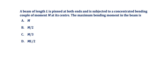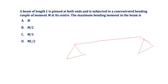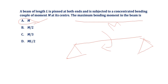A beam of length L is pinned at both ends and is subjected to a concentrated couple of moment M at the center. Whenever a couple of moment only is given, the maximum bending moment in the beam is equal to the couple of moment M. So option A — M — is the correct answer.